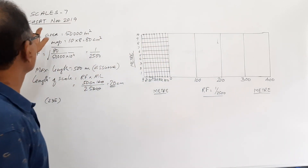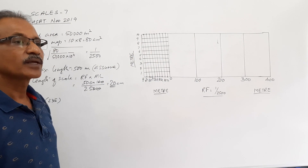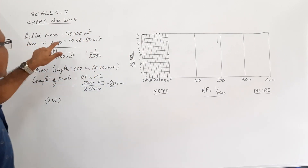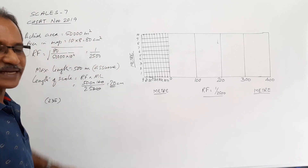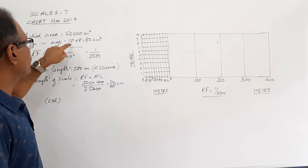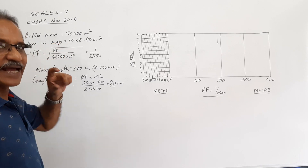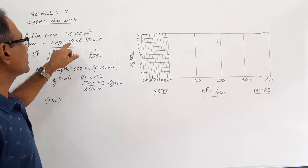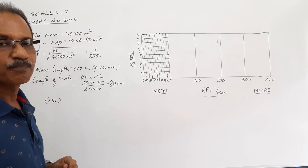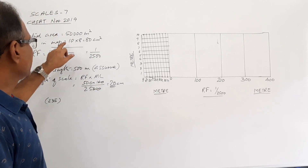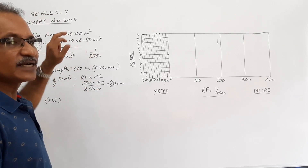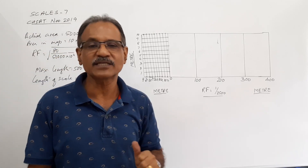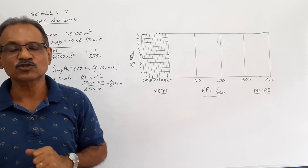In the year 2019, November 2019, it's a diagonal scale. The question says an area of 50,000 meters square is represented by a rectangular area whose length and breadth are 10 cm and 8 cm respectively. This means 80 cm square represents 50,000 meters square.